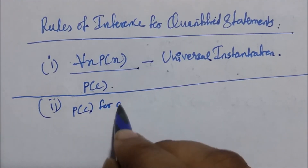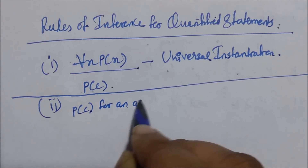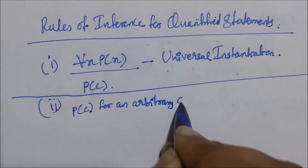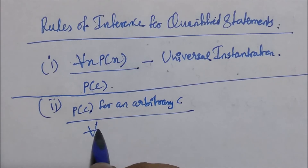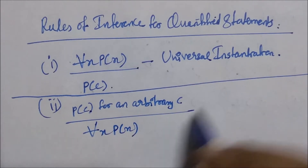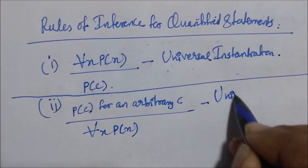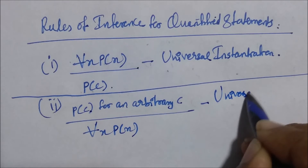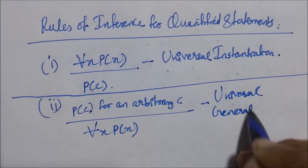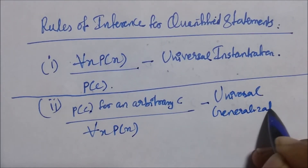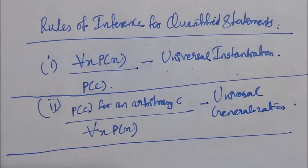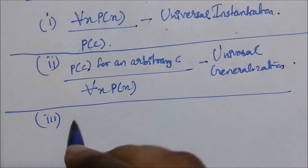Now, if P of C is true for any arbitrary C — no matter any arbitrary element you take, P of that element is going to be true — then for every element in the domain, P of X is going to be true. So, for all X, P of X is true. This is the rule of universal generalization.